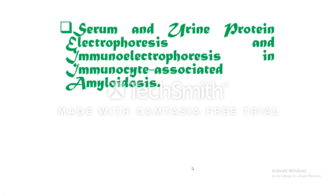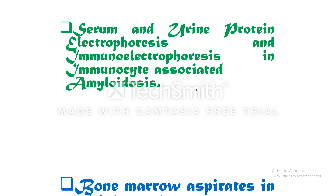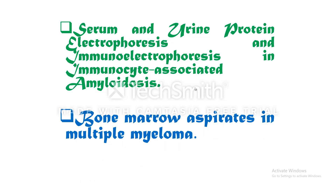We can do serum and urine protein electrophoresis and immunoelectrophoresis in cases of immunocyte-associated amyloidosis — these tests are easy and very useful. We can also do bone marrow aspirate in multiple myeloma, which is a malignant tumor of plasma cells causing masses of plasma cells in the bone marrow, allowing easy diagnosis.